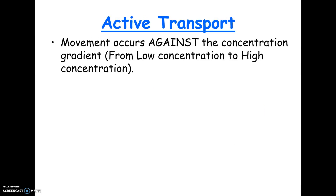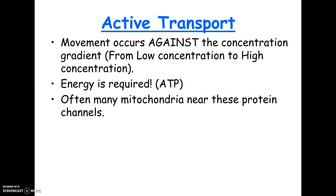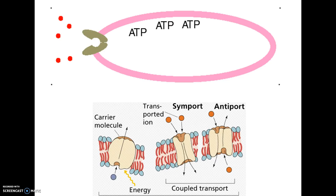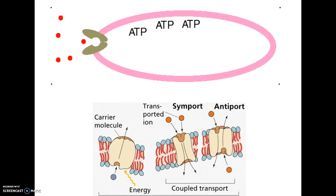Active transport is the opposite — the cell uses energy to pump things against their gradient. ATP is required for this, which means you might actually see mitochondria in areas where this is going on. In a picture, you would probably see ATP.